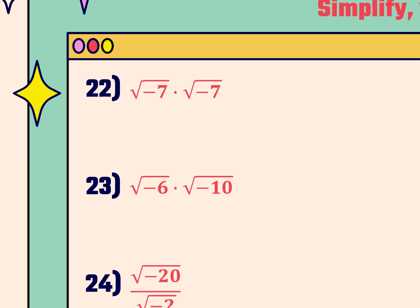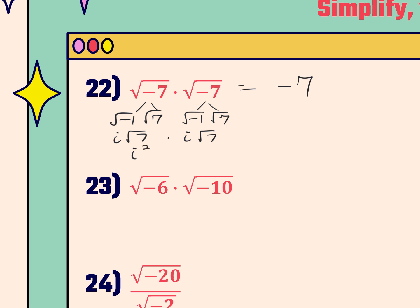For this example, remember when you do factor trees and get a pair of numbers under the radical, that pair comes out as a perfect square. So if you have a pair of negative 7s under the radical, the answer is just negative 7. However, if you didn't remember that, break them down: factor each as negative 1 times positive 7. Each negative 1 gives an i, so you get i times i equals i squared, and you get a pair of square root 7s that come out. Since i squared equals negative 1, the answer is negative 1 times 7, which is negative 7.